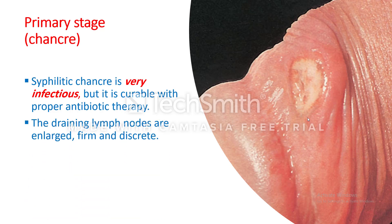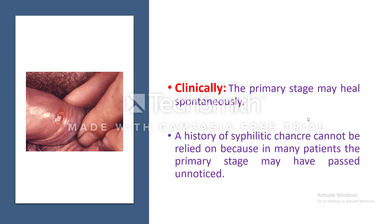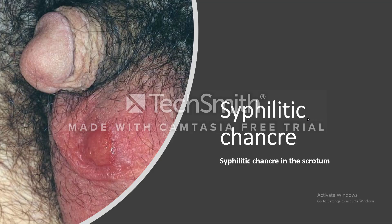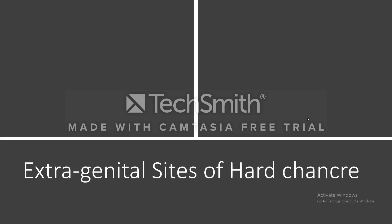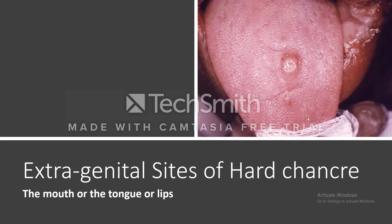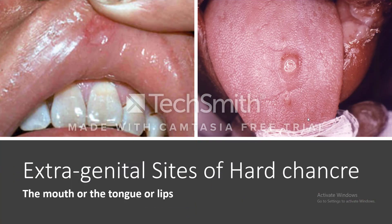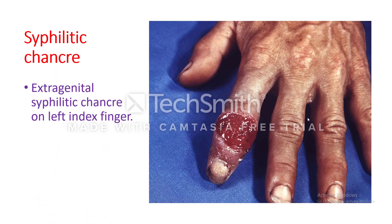The draining lymph nodes are enlarged, firm, and discrete — reactive lymph nodes. Clinically, the primary stage may heal spontaneously with or without treatment, so a history of a syphilitic chancre cannot be relied upon, as many patients may not notice it. Extra-genital chancres can appear on the scrotum, mouth, tongue, lips, and even on the finger, such as the left index finger.